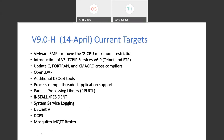The current process dump capability does not include the ability to look at threaded applications, and we're hoping that will get into the April release. Parallel processing library, install resident, system service logging, DECnet phase five — and just recently we've added DCPS, the print service, to the April release. Again, a nice handful of things with a wide scope across the system.